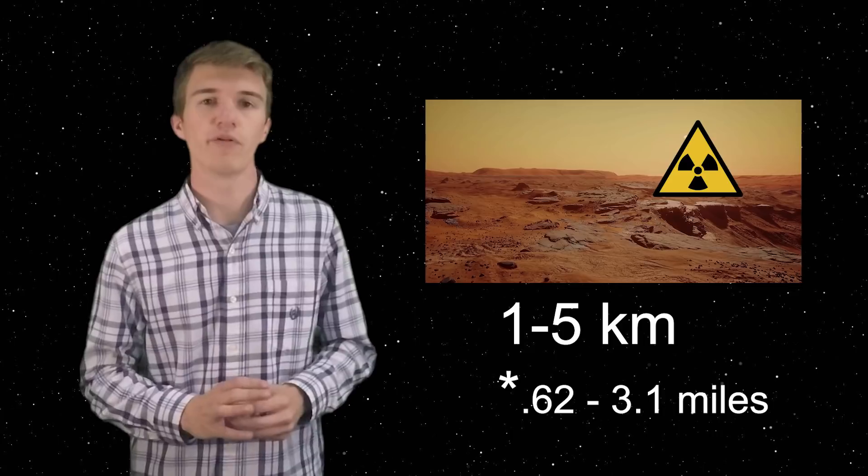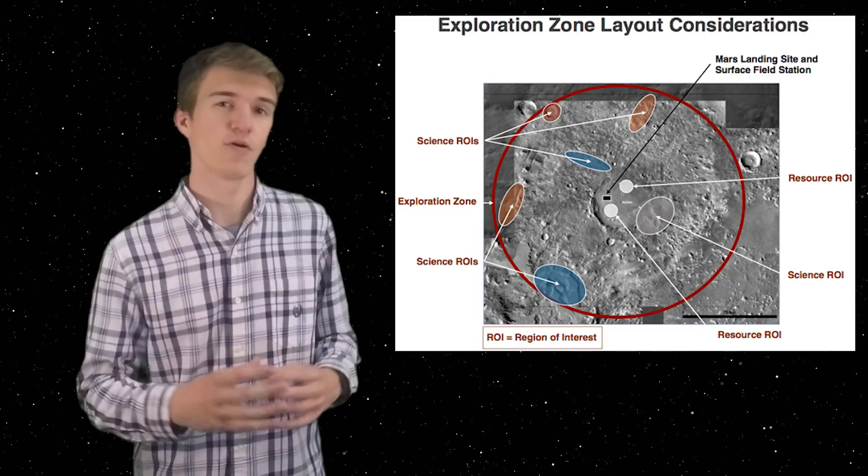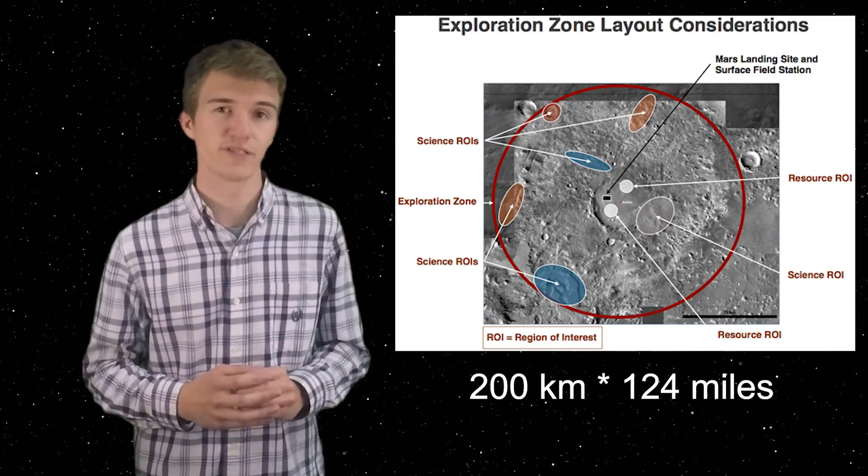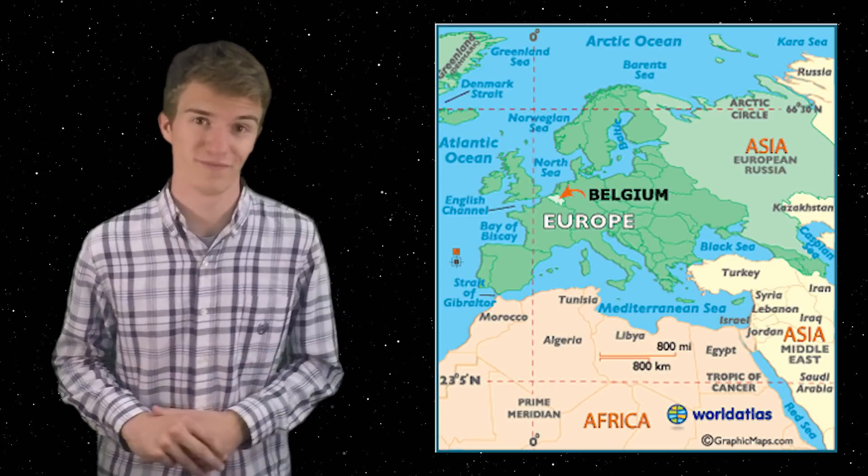So all of this had to be planned in their proposal, and the overall exploration zone would be a circle with a diameter of 200 kilometers, which is approximately equal to the surface area of the country Belgium. So now that we've covered some of the limitations that NASA set for these exploration zones, we have to look into some of the scientific areas of interest, or basically goals that they want to be able to achieve.